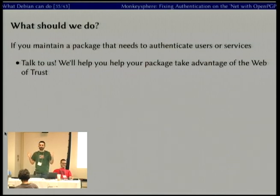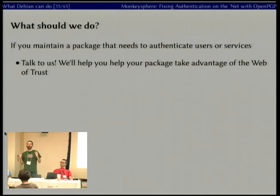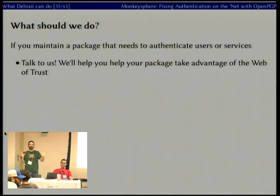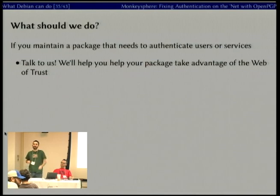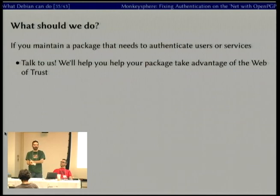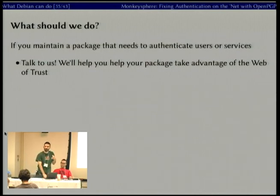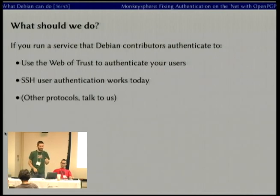If you maintain a package that authenticates users, like the OpenSSH server package, or authenticates services, like various clients — the Gabii client for example — we should get rid of prompts that say gobbledygook and instead say this Gabii instance was certified by whoever set it up. If you maintain such a package, talk to us — we'll help you take advantage of the web of trust infrastructure. If you run a service that Debian contributors authenticate to, you can actually use the web of trust to authenticate your users. We've talked mostly about users authenticating services, but this is bidirectional and we have that functional for OpenSSH.